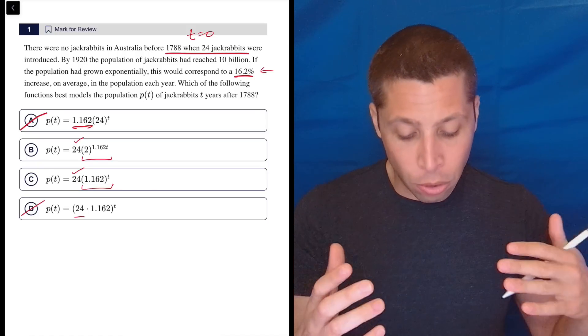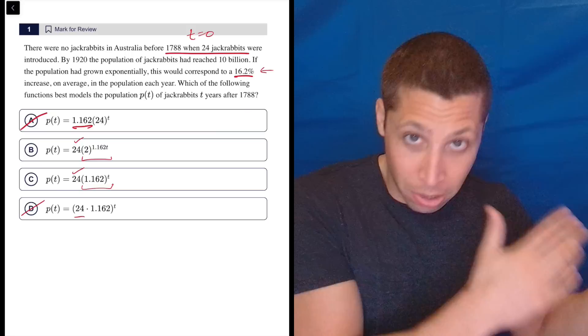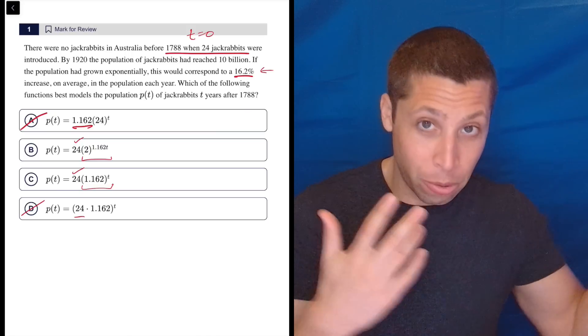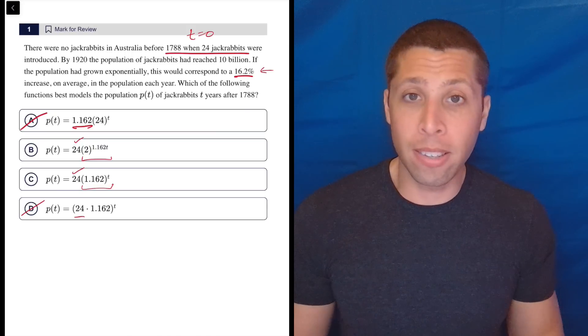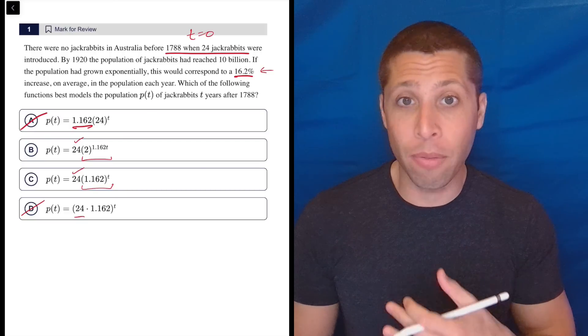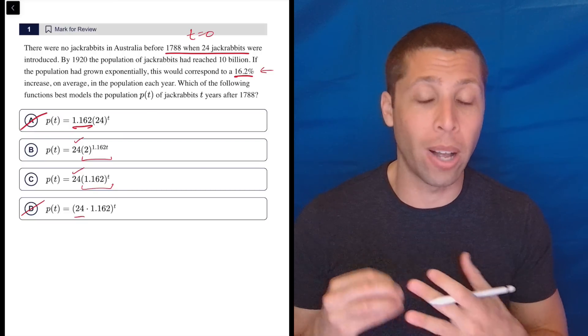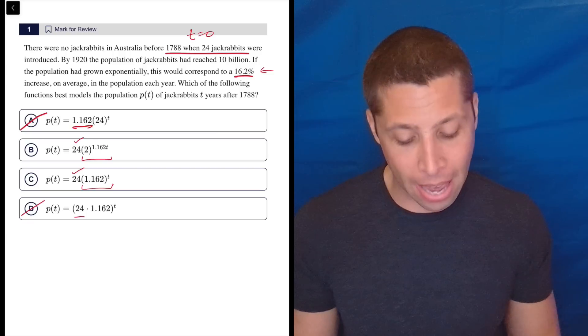In choice B, 1.162 times zero is zero, and then two to the zero is one, and so 24 times one is 24. So you should know that. This is basics of how exponents behave, the zero and one properties, as well as just the basics of how exponential functions behave.